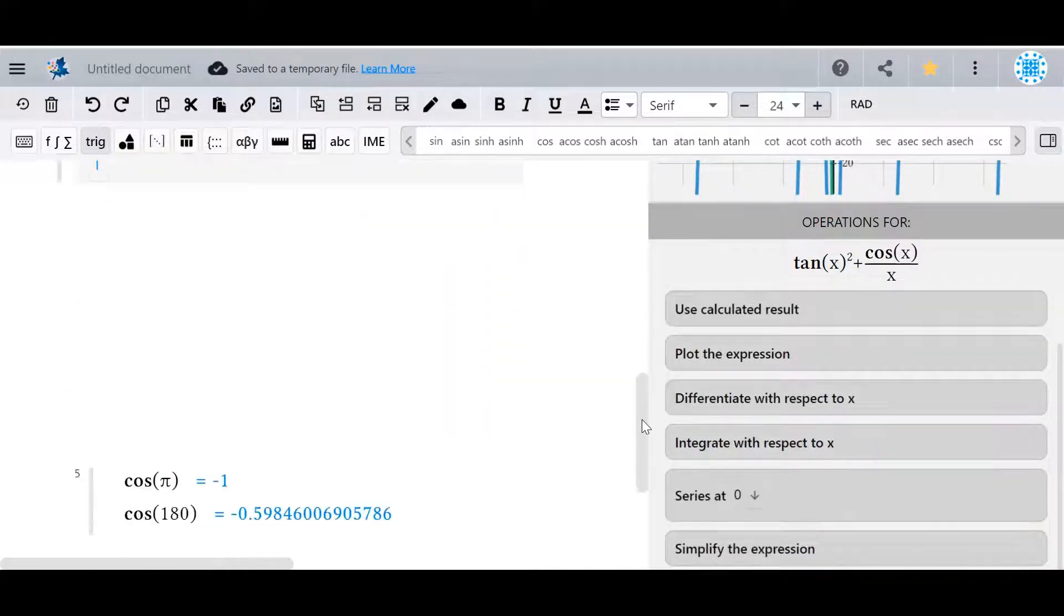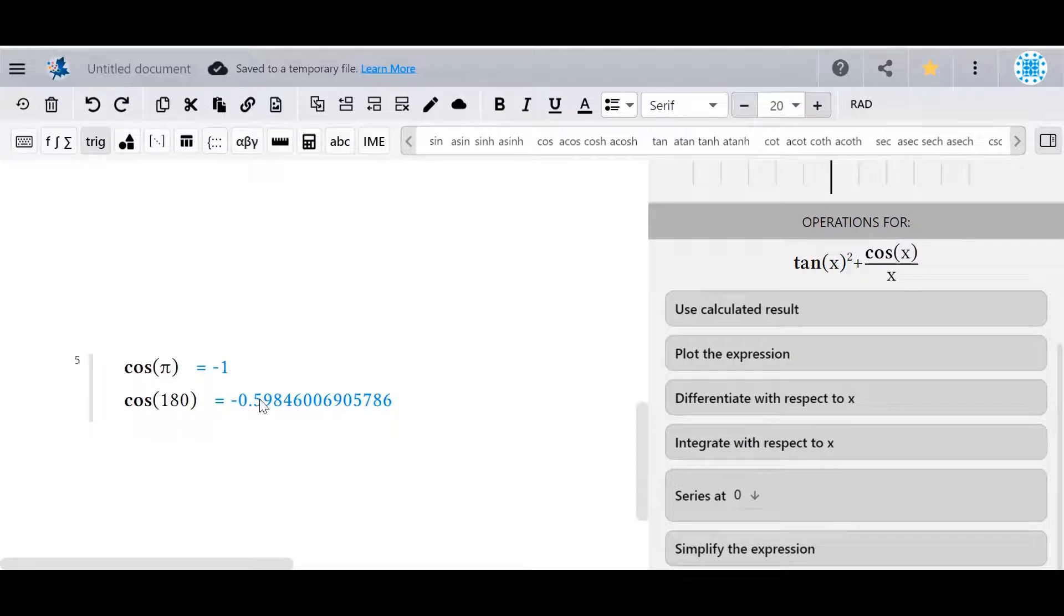Finally, note that MapleLearn can evaluate trig functions in either degrees or radians. To toggle between the two, click this icon right here. My document is currently using radians, now it's using degrees. And you can switch back and forth between the two.